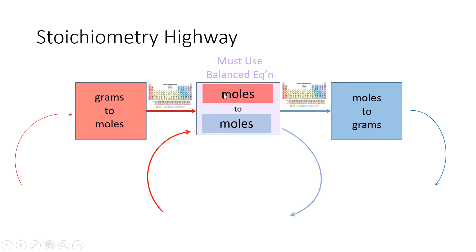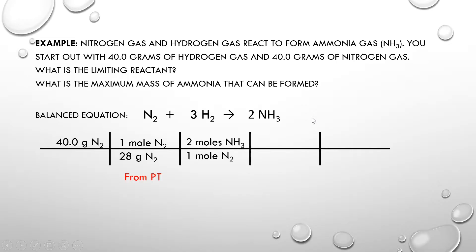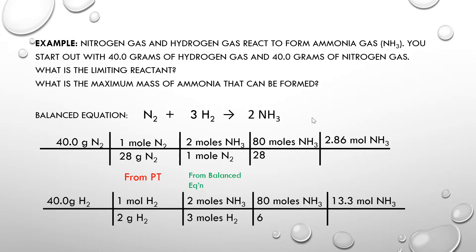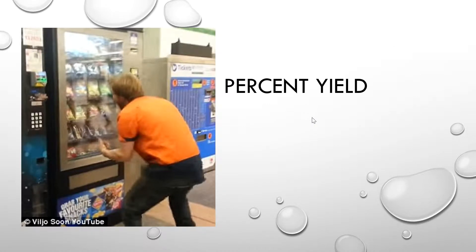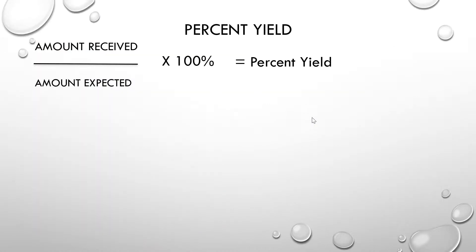Moles to moles is going to happen in every problem, and that gets you from one substance to a different substance — that's where you use the balanced equation. Then if you need grams again, you use the periodic table a second time. Percent yield is what you receive divided by what you expect, times 100.